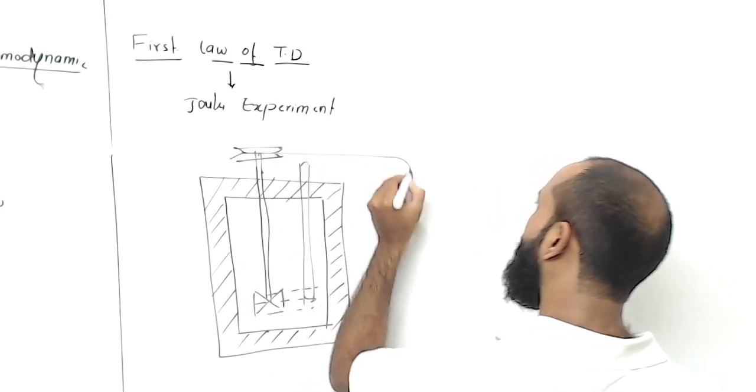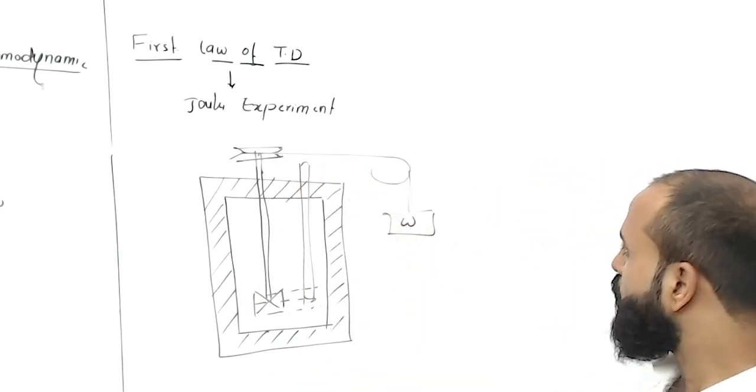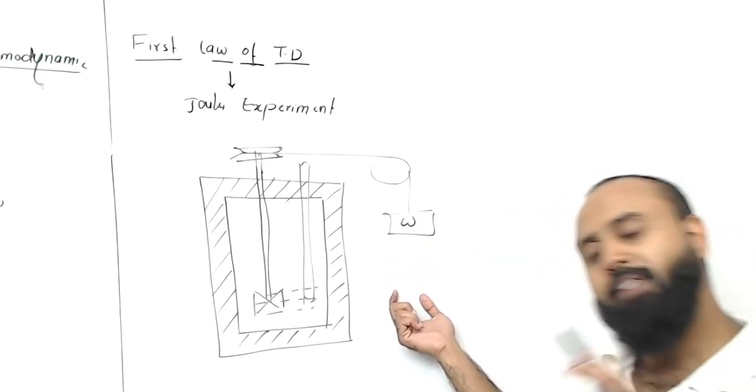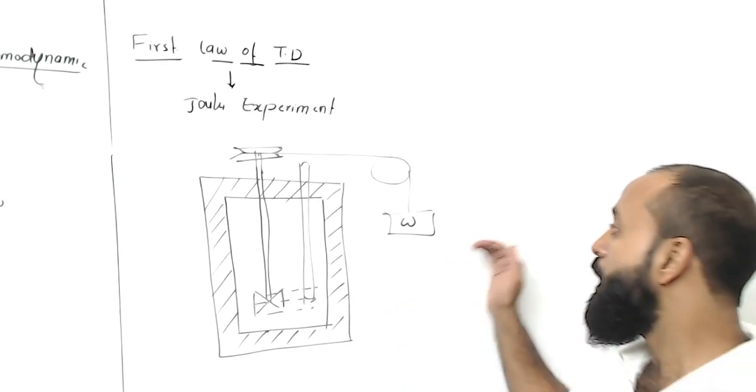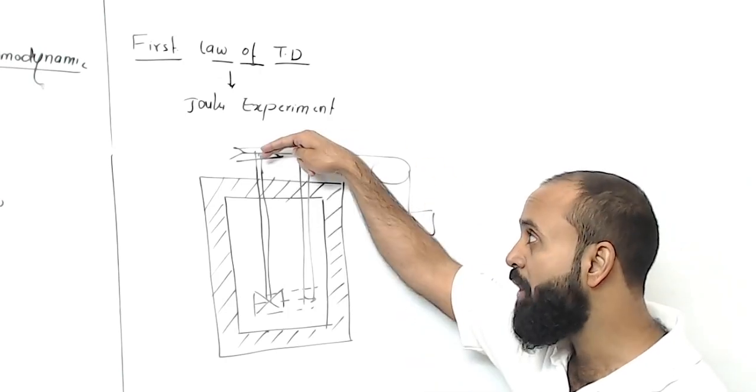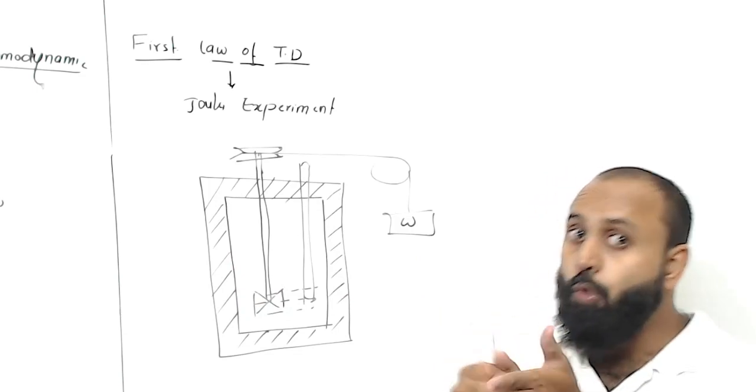Some mechanical arrangement was done here with a pulley system, and a weight was dropped downward. When this weight goes down, there is a change in potential energy. We know energy can neither be created nor destroyed, only one form can be converted into another. So whatever change in potential energy is observed here is getting converted into work in this stirrer. Your stirrer will rotate.